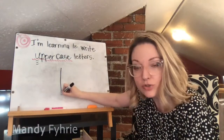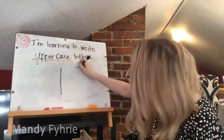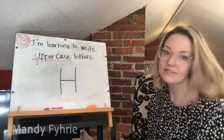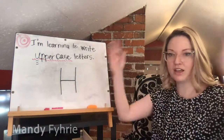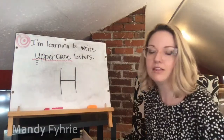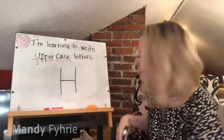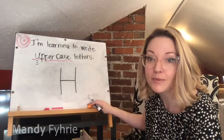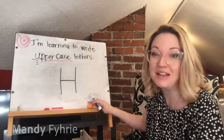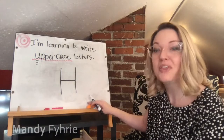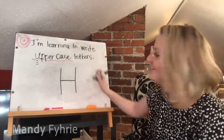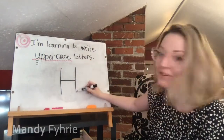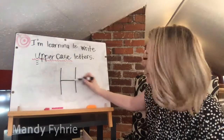Capital H: big line down, then another parallel line — close to it but not touching — another big line down, then up to the middle, little line across. Think of a football goalpost. Big line down, hop to the top, big line down, up to the middle, and a little line across.